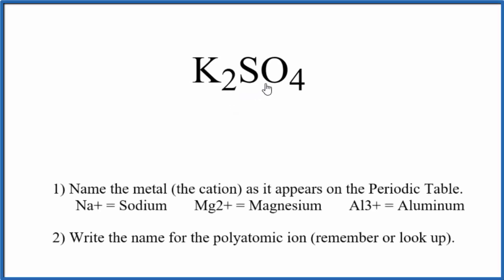To write the name for K2SO4, the first thing we need to realize is this SO4 here, this is the sulfate ion. It's a polyatomic ion.